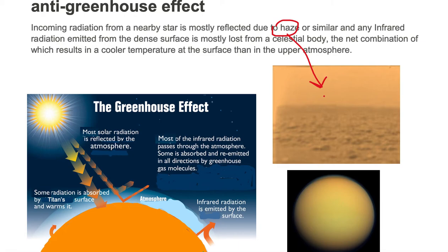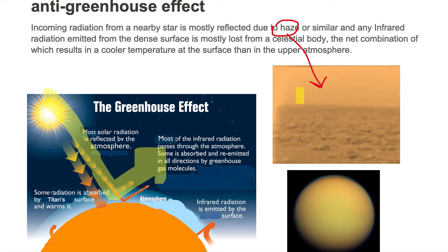Because of this haze, we have a lot of the incoming solar radiation bouncing off the atmosphere of Titan. Around 90% is reflected off due to this haze. What little does come in and hits the ground and is re-radiated or emitted as infrared radiation, a lot of it is lost from the atmosphere due to this haze.